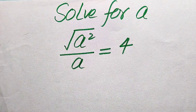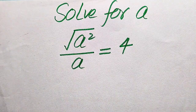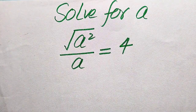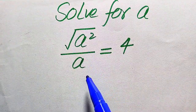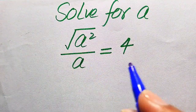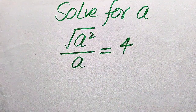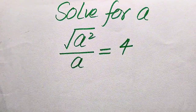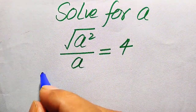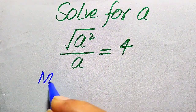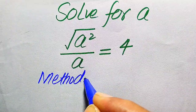Hello everyone. How to solve this problem for the values of a, if we have √(a²) divided by a equals 4. We will solve this problem using two methods.